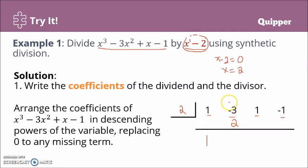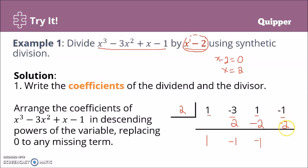Next, perform the indicated operations. Negative 3 plus 2 gives negative 1. Repeat the process: multiply negative 1 times 2, that's negative 2. Then perform the indicated operation: positive 1 plus negative 2 gives negative 1. Multiply again: negative 1 times 2 is negative 2. Then negative 1 plus negative 2 gives negative 3.